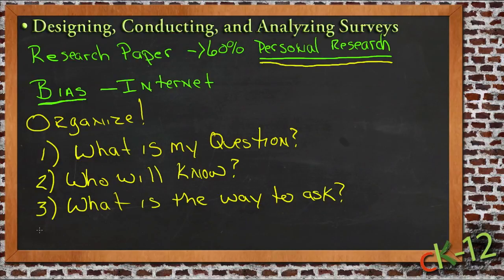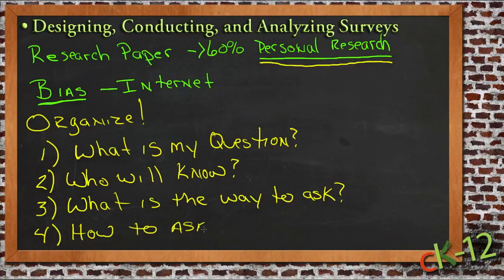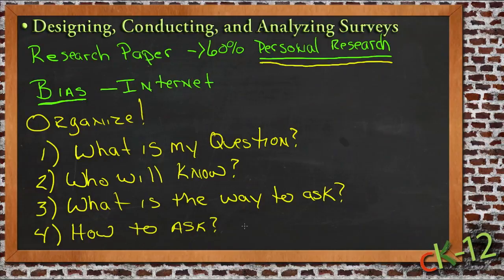The next thing is to decide how you're going to ask the questions — in other words, what order to put things in. If you have five questions in a row about how great PlayStation 3s are and then ask somebody if they really like Xbox anyway, you're going to be slanting their opinion. So figuring out the right order is very important.